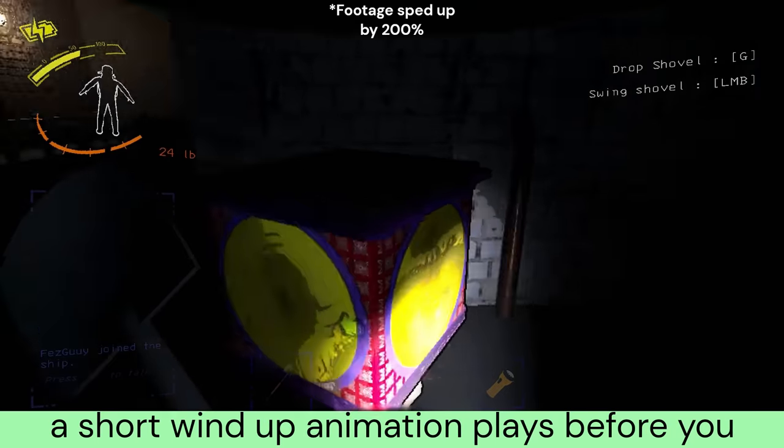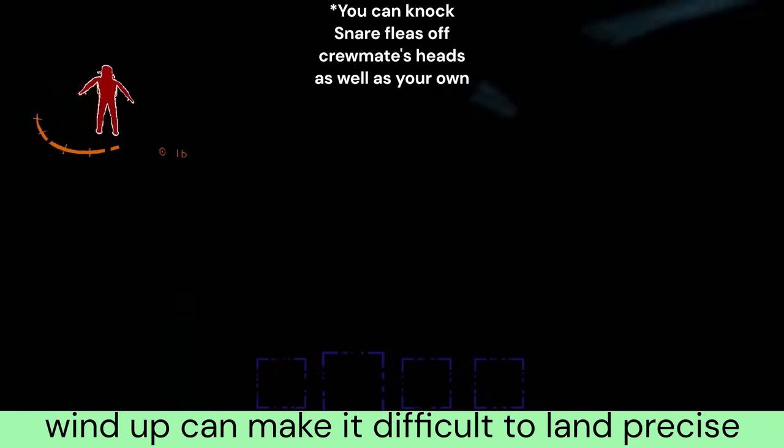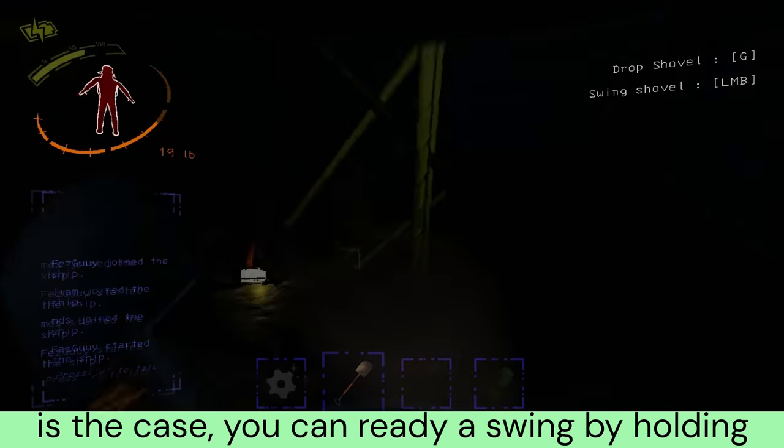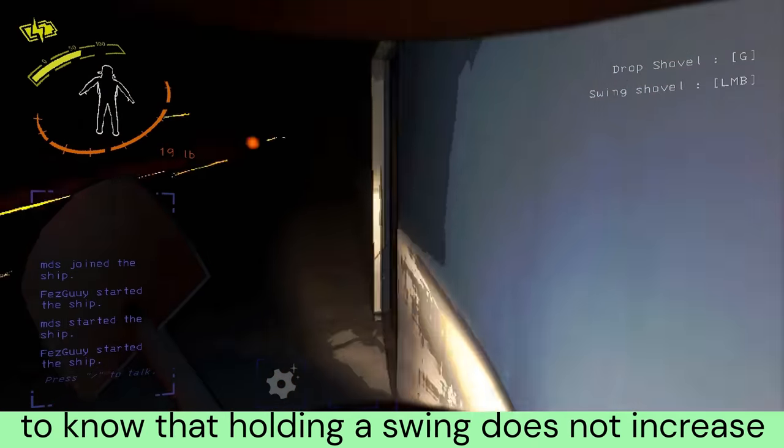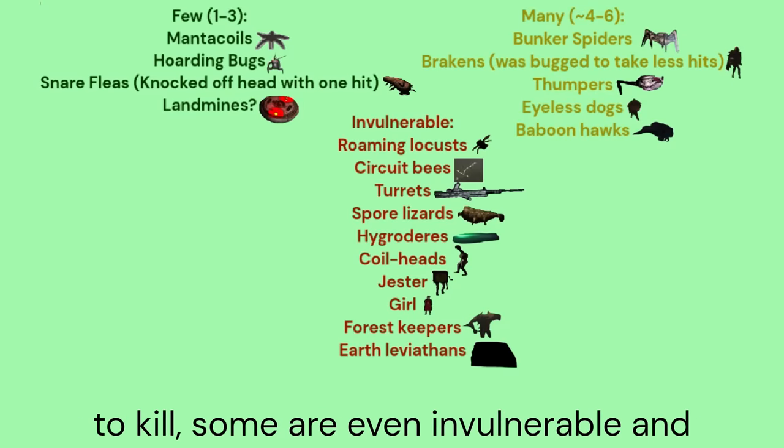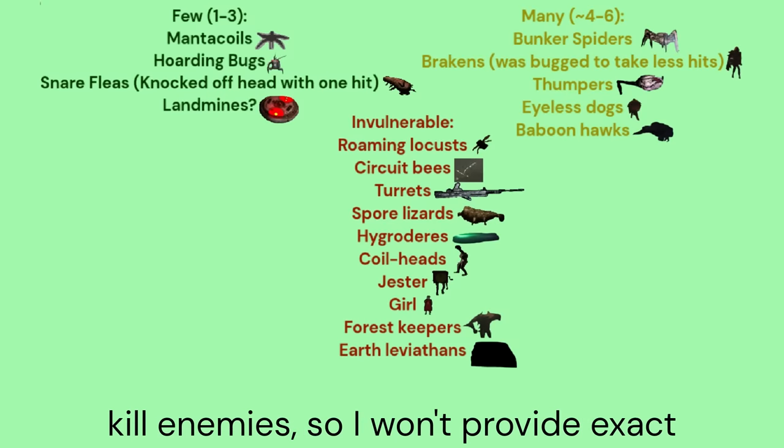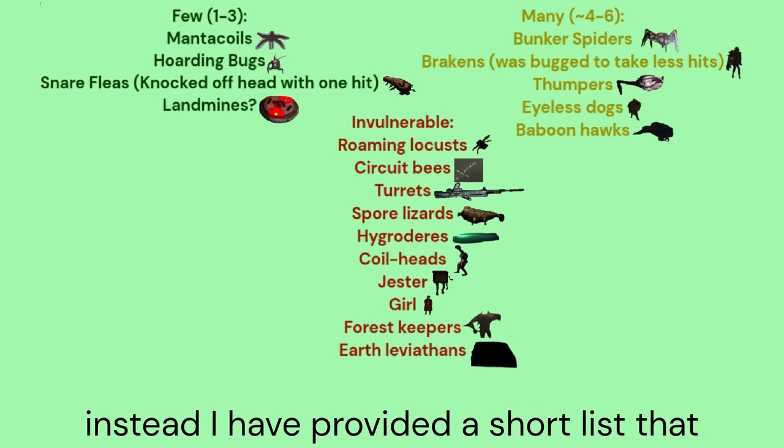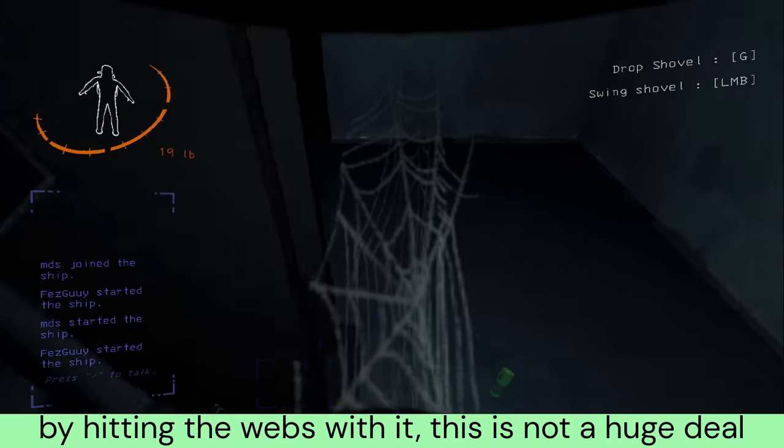This is done by swinging the shovel with a click of the left mouse button. After clicking, a short wind-up animation plays before you swing the shovel and hit something in front of you. You can ready a swing by holding down the left mouse button. When you release it, you will swing the shovel right away. It is good to know that holding a swing does not increase the attack's power. The shovel can also be used to clear spider webs by hitting the webs with it.